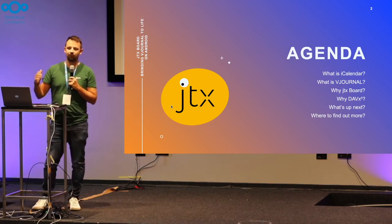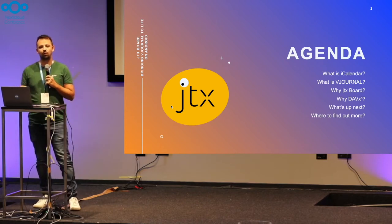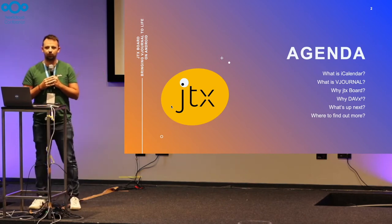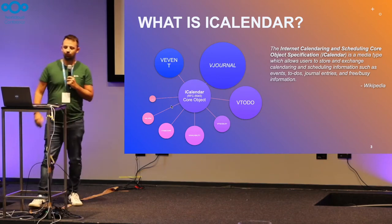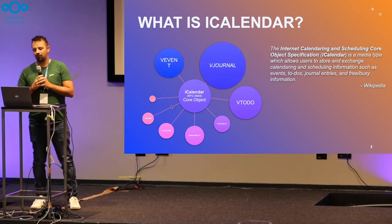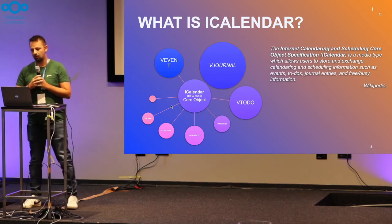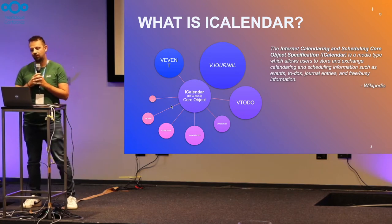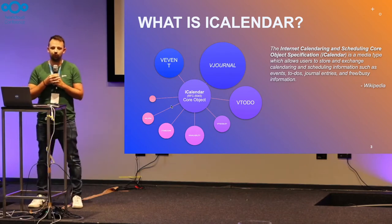So, the vTronal standard. In order to give you some context on what the vTronal standard is, we need to go one step back to the iCalendar standard. We already heard about the vEvent component in the iCalendar standard. So what is iCalendar? The iCalendar is a media type which allows you to store and exchange calendaring and scheduling information, such as events, to-dos, journal entries, and free/busy information. So it's not only about calendaring — it's also the whole context of calendaring.